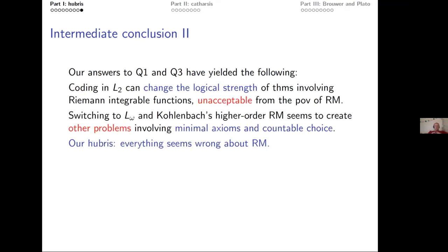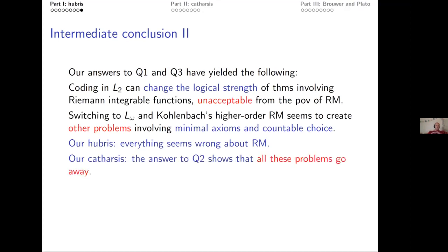This is the hubris that Dag Normann and I undertook: we dared to imply that everything seems to be wrong with reverse math. People don't like this; people get verbally abusive. Luckily, there's also catharsis. In the last year or so it was all catharsis — everything is actually all right with reverse math. In the remaining part I will show that the answer to question 2 makes all problems go away.